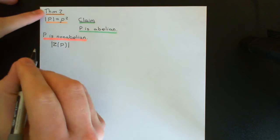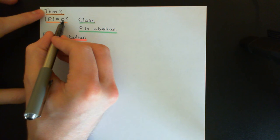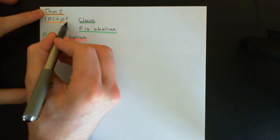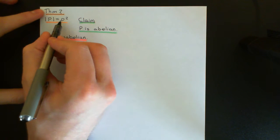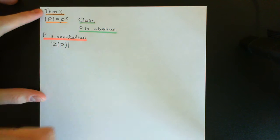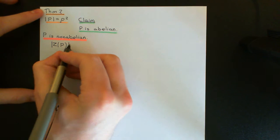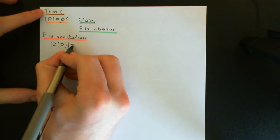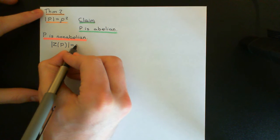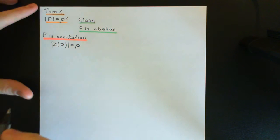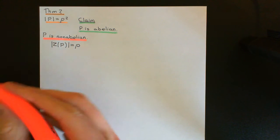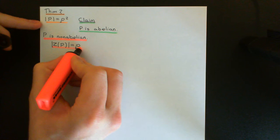The order of the centre cannot be 1 by the prerequisite theorem, and it is not equal to P squared because of our assumption that P is non-abelian — so it's not equal to the entire group. Therefore, we must conclude that the order of the centre of the group is equal to P, this prime number.